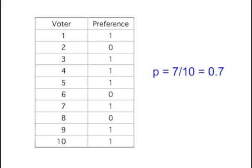Note that 7 of the voters prefer candidate A, so the sample proportion, p, is 7 divided by 10, or 0.7.